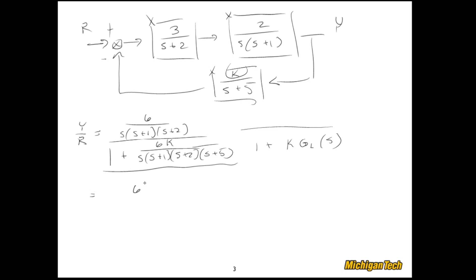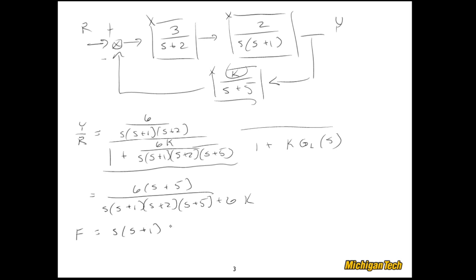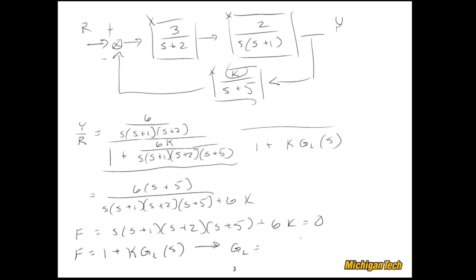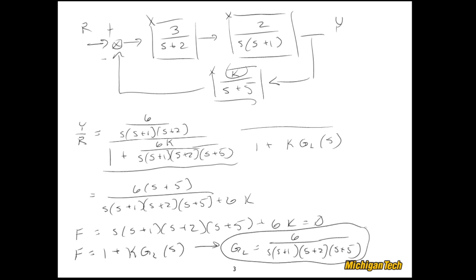Simplifying the characteristic equation and writing it in the form 1 + K·GL(s) = 0, we find that GL(s) = 6 / [s(s+1)(s+2)(s+5)]. This is the quantity we use as an argument to MATLAB's rlocus or rlocfind commands, and also when sketching the root locus by hand.